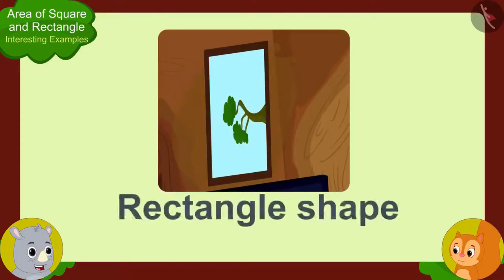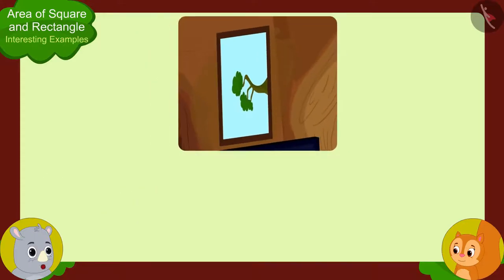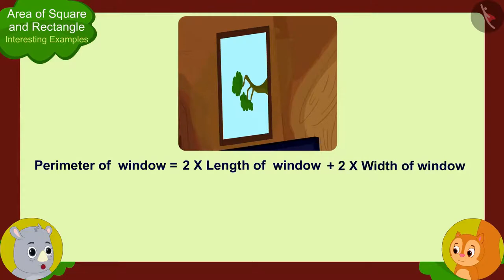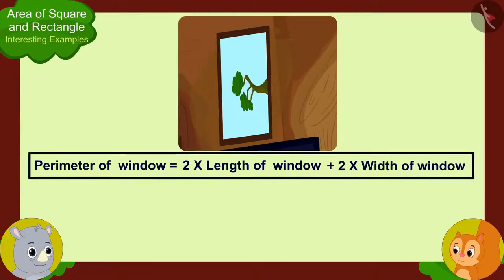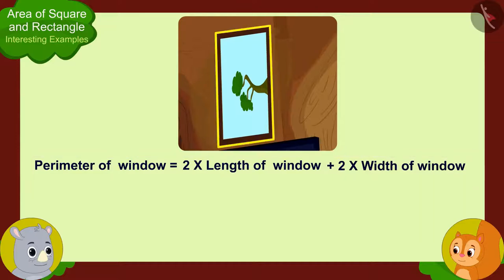That means we can write the perimeter of your window as two times the length of the window plus two times the width of the window.